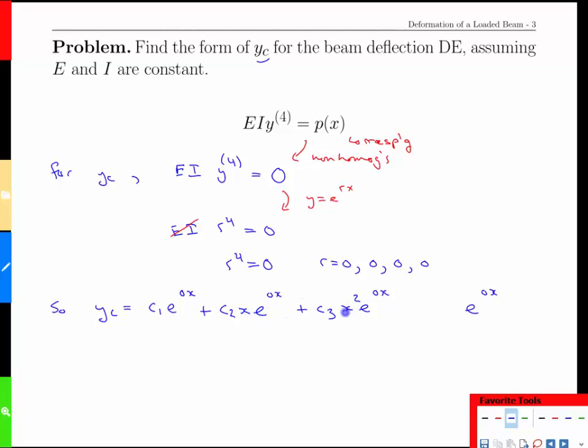Well, instead of having x out front, we'll have an x squared in the next term, and in the last one, we'll have an x cubed in front of the e to the 0x. Those four functions are all linearly independent, and they all match the r values we found before, and in fact, we can simplify those because e to the 0 is just 1. So we're going to have c1 plus c2x plus c3x squared plus c4x cubed.